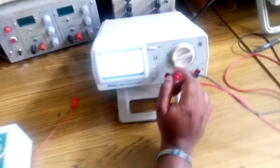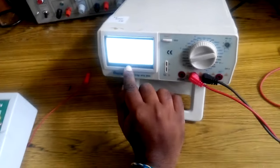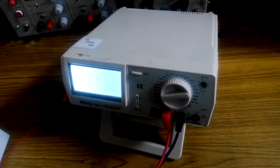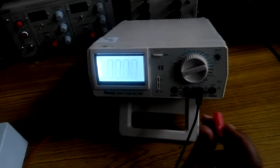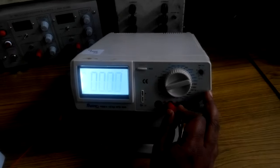The multimeter is connected in 0 to 200 micro amps range. The point that has to be remembered here is that for the ammeter we need to connect the positive in the milli amps position.